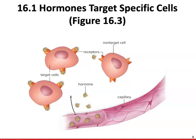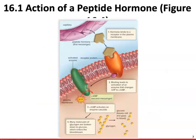Steroid hormones belong to the lipid group — they are lipids derived from cholesterol. They all share the same complex structure of a four-carbon ring. Estrogen and testosterone are both examples of steroid hormones derived from that basic four-ring structure of cholesterol. Most hormones are peptide hormones, and their actions can vary depending on their target cell and what is needed.